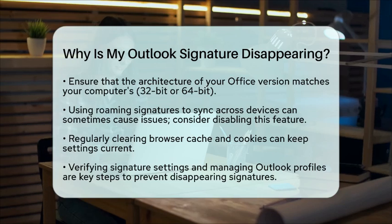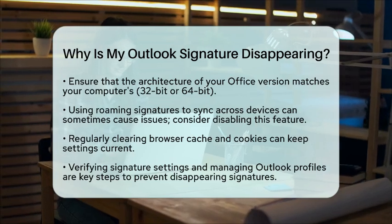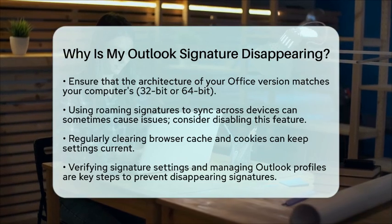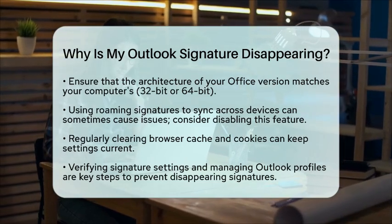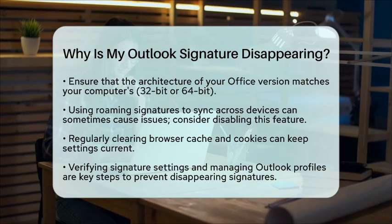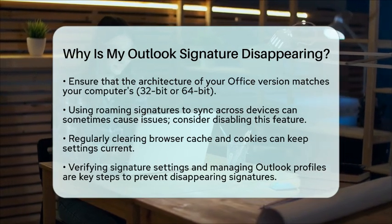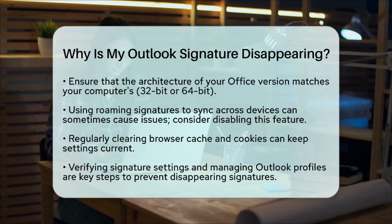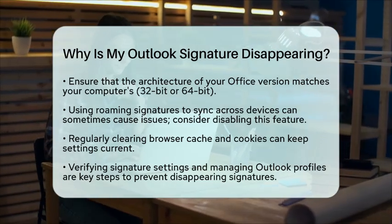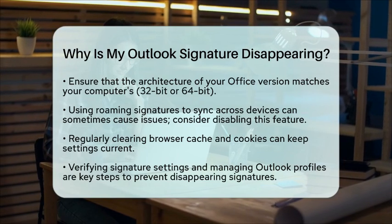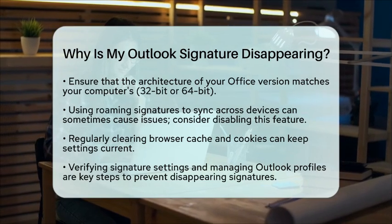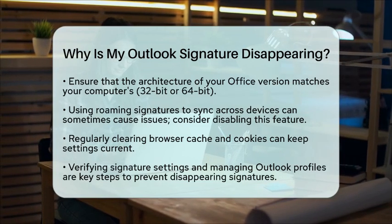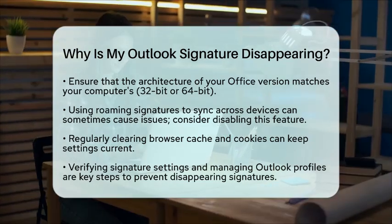To apply these solutions, start by regularly clearing your browser's cache and cookies — this keeps your settings up to date. Always verify that your desired signature is selected for new messages and replies. Managing your Outlook profiles and ensuring your software versions are consistent and updated can help avoid conflicts. By addressing these potential causes, you should be able to resolve the issue of your Outlook signature disappearing.